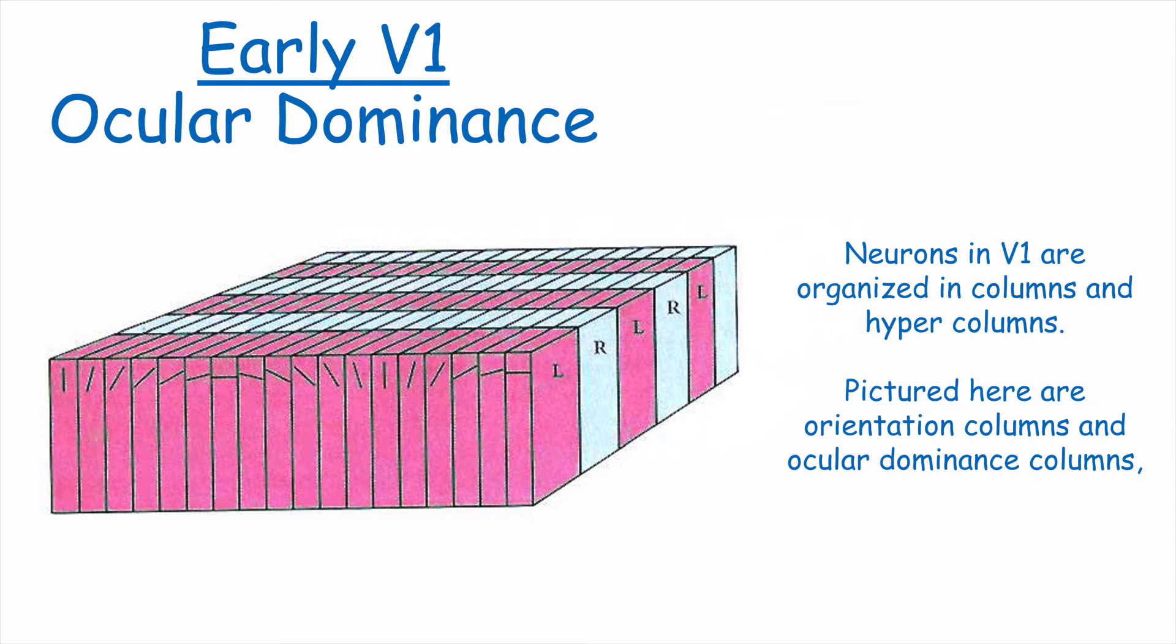The neurons in the primary visual cortex are organized into columns and hypercolumns. The orientation columns, as you can see, progress from left to right, whereas the alternating columns represent the left and right eye respectively. This leads to ocular dominance, the fact that one eye might encode the information to a greater extent than the other.